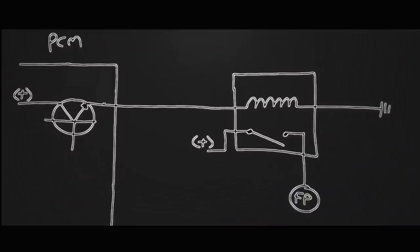When we talk about output controls, we're talking about the computer switching a device on and off. The device the computer is switching on and off in this case would be the relay - specifically the control side of the relay. I always call this the control side and this is the load side. The control side makes a magnetic field; the load side carries the current for the device. My fuel pump motor doesn't have a ground in this diagram, so it's never going to run.